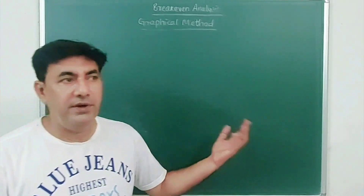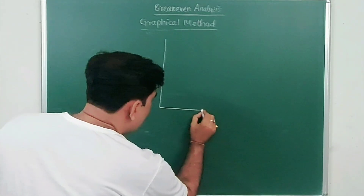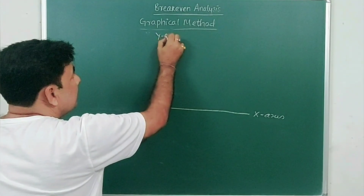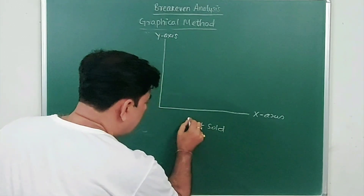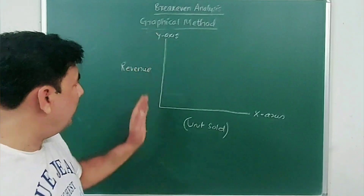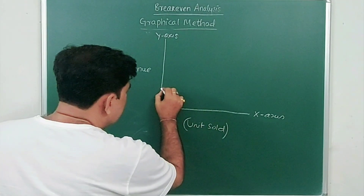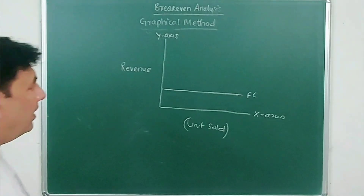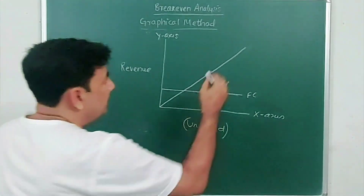Let's see how to draw graphs for break-even analysis. On the x-axis we plot units sold, and on the y-axis we plot revenue. Draw a line parallel to the x-axis — this line is generally for fixed cost. Then draw a line straight from the origin — this line is generally for income.